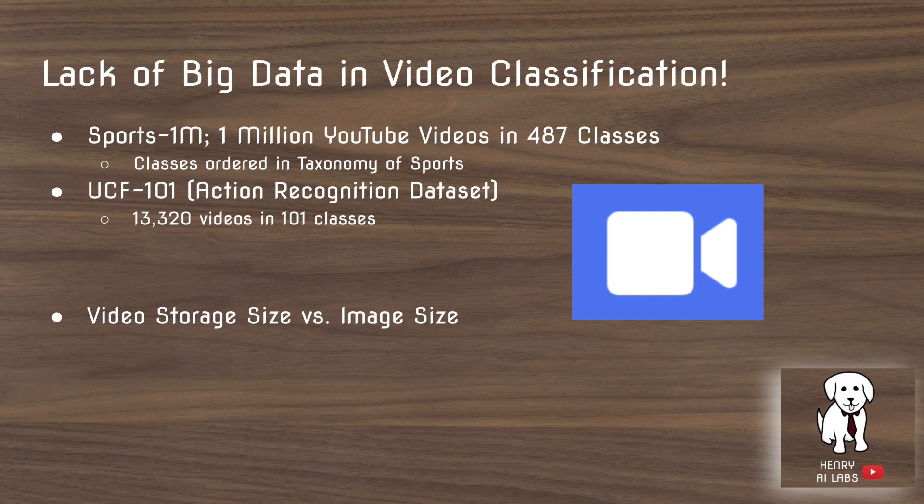In video classification, achieving big datasets is very difficult. This isn't just due to labeling problems, but also mainly due to the storage size. A video compared to an image is a stack of frames. So if you have a 200x200 resolution with RGB, you have 200x200x3 pixels, and each pixel needs 8 bytes to store the 0 to 255 values.